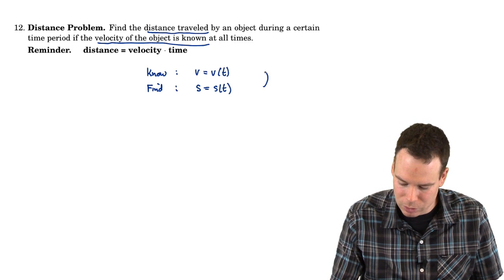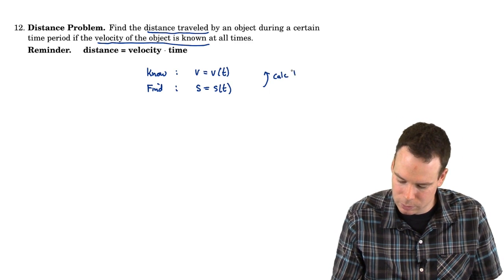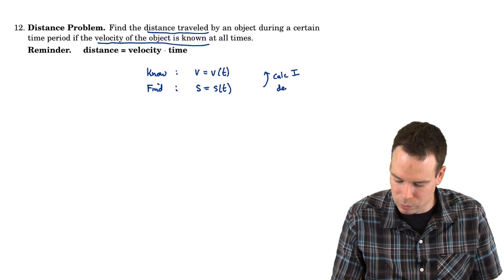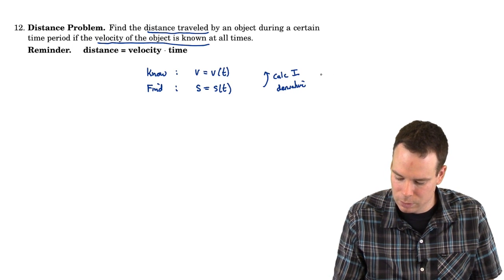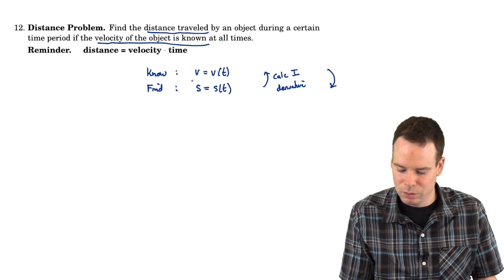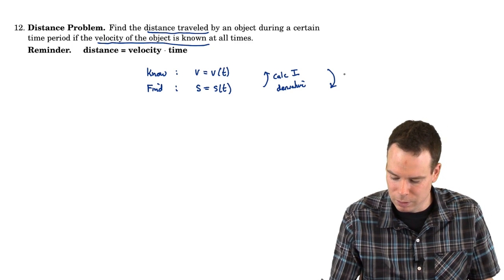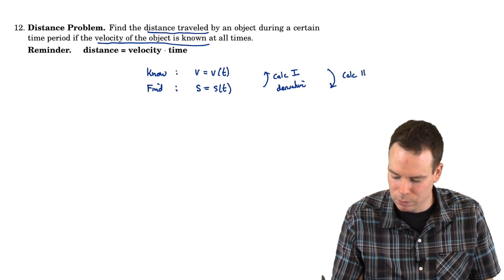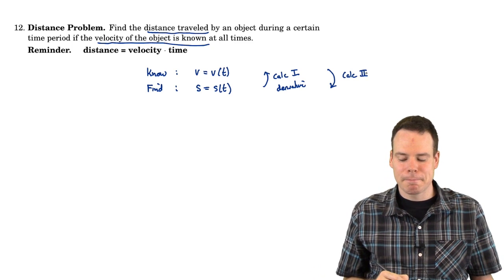Remember this direction was Calc 1. This was the derivative. This direction, starting with the velocity and finding the position, that's Calc 2. So how do we do that?